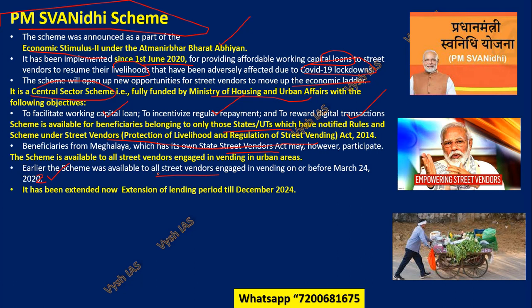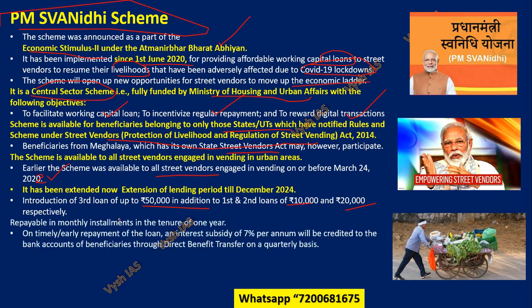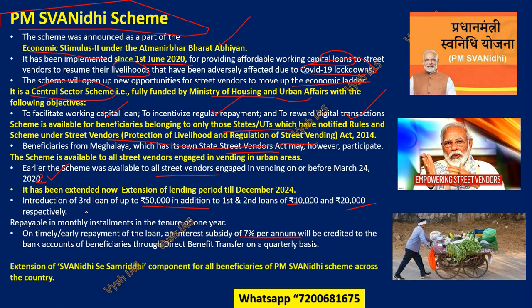The scheme was extended till 2024, which is one of the latest updates. The loan amount has been progressively increased: first it was 10,000 rupees, then 20,000, and now up to a third loan of 50,000 rupees, making the scheme bigger. Repayment tenure is one year, and on timely or early repayment, the 7% per annum interest subsidy is waived off — meaning the government covers the interest and you only repay the capital.